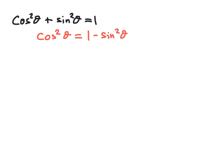We could also subtract cosine squared from the original equation, and get sine squared of theta equals 1 minus cosine squared of theta. And again, we could replace sine squared theta with 1 minus cosine squared theta, or replace 1 minus cosine squared theta with sine squared theta. The other two Pythagorean identities work the same way and can be rearranged in analogous ways.